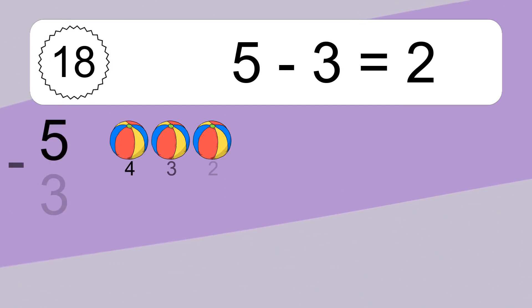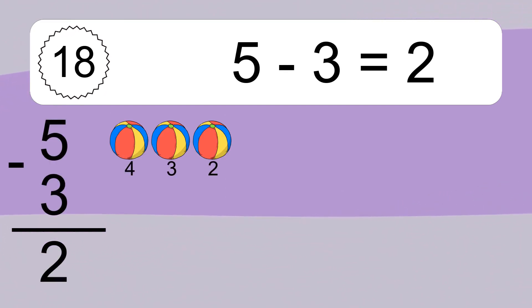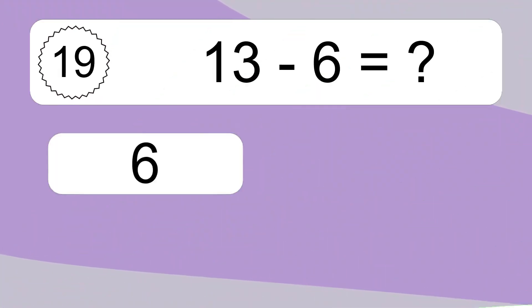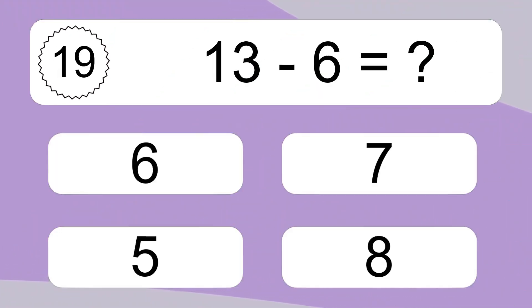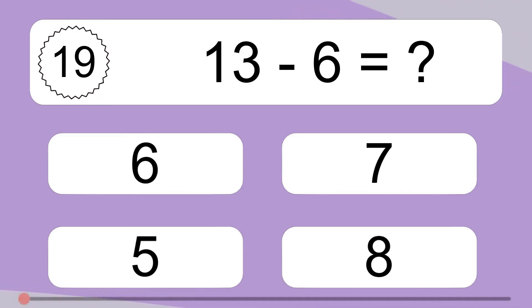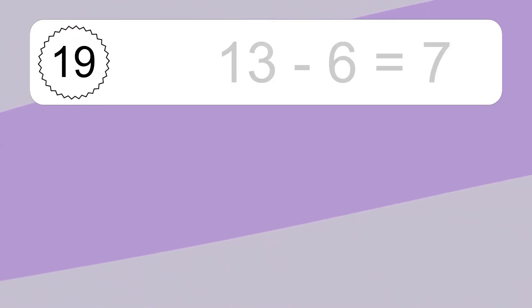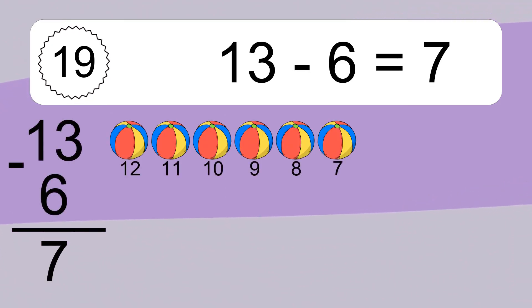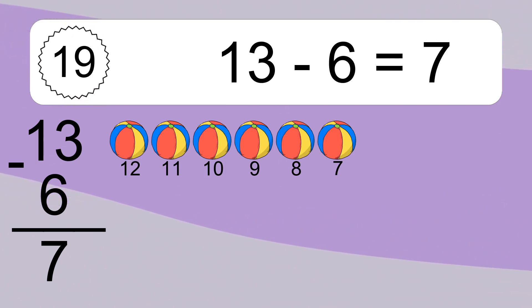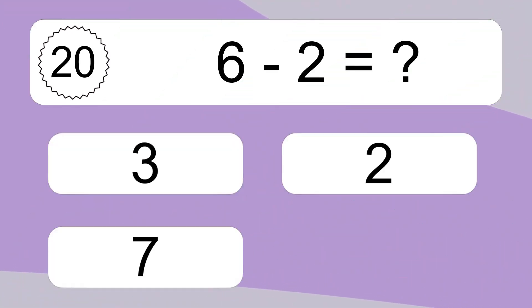5 minus 3 equals 2. Let's count it. 4, 3, 2. 13 minus 6 equals what? 13 minus 6 equals 7. Let's count it. 12, 11, 10, 9, 8, 7.